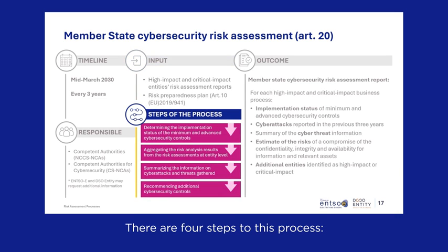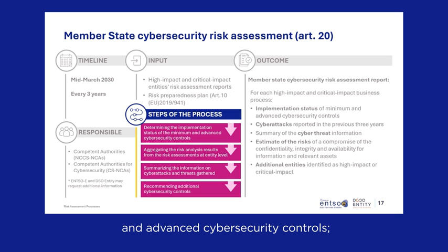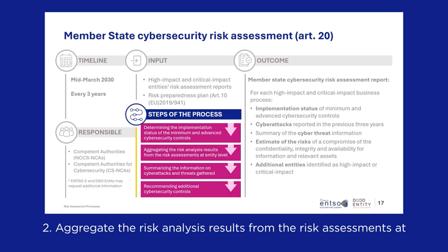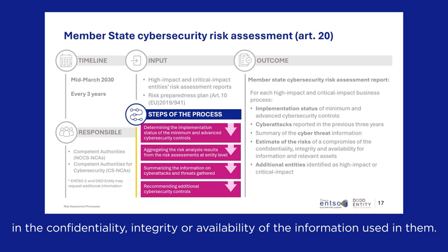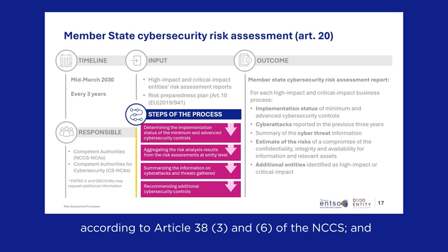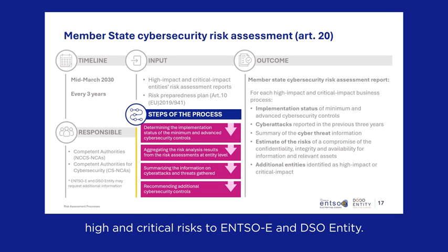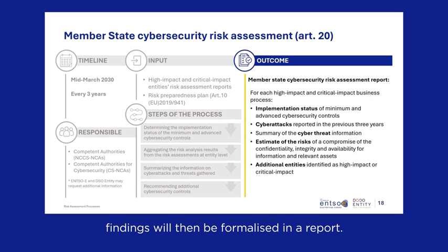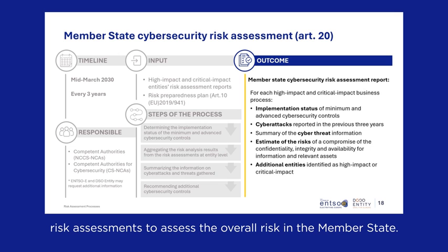There are four steps to this process: 1. Determine the implementation status of the minimum and advanced cybersecurity controls. 2. Aggregate the risk analysis results from entity-level assessments to determine the likelihood and consequences of a compromise to the confidentiality, integrity, or availability of the information used. 3. Summarize information on cyberattacks and threats gathered according to Article 38, Paragraphs 3 and 6 of the NCCS. 4. Recommend additional cybersecurity controls to mitigate high and critical risks to ENTSOE and DSO Entity. The competent authority will then aggregate the risks from the risk assessments to assess the overall risk in the member state.